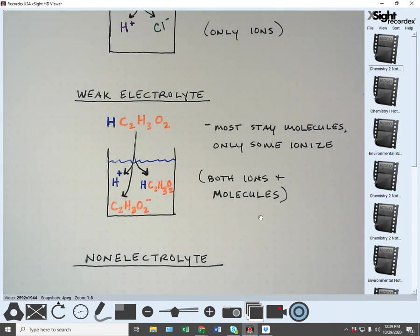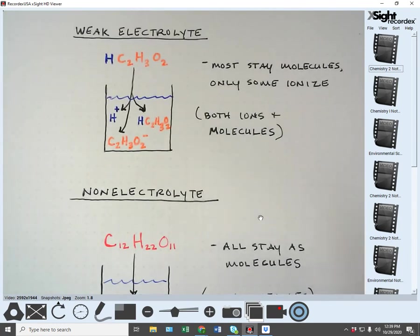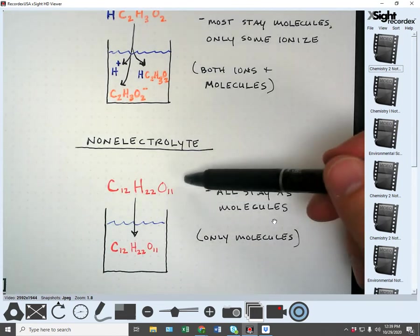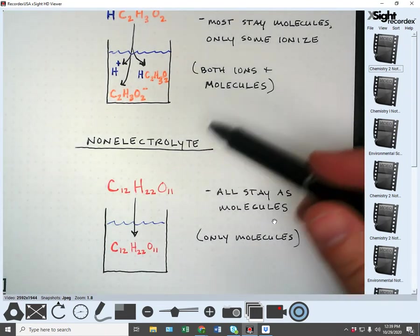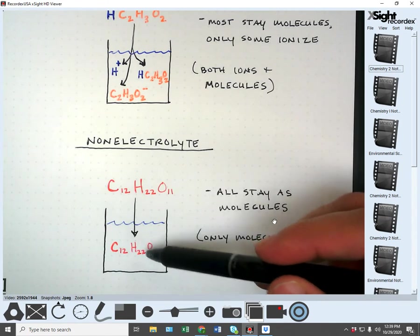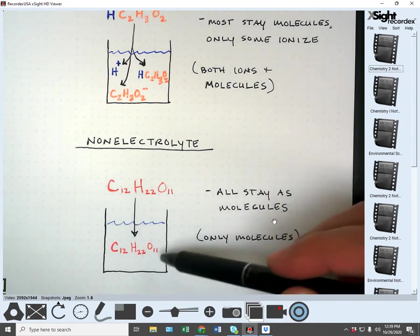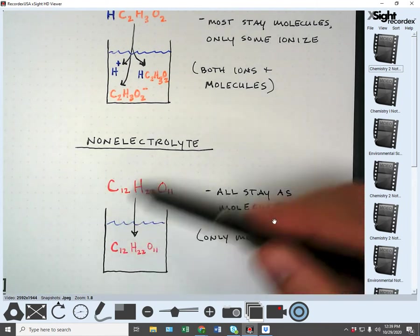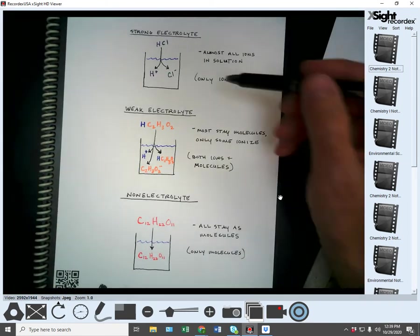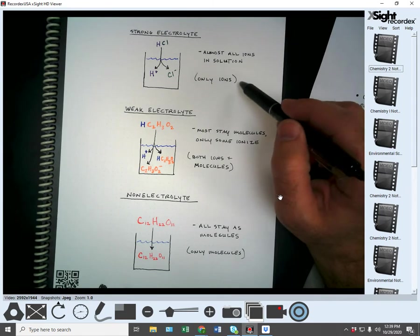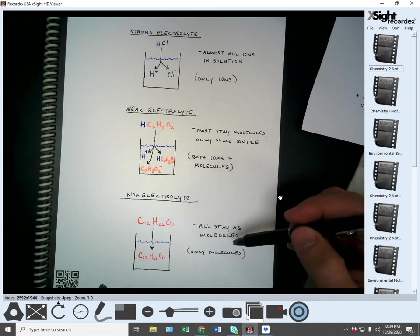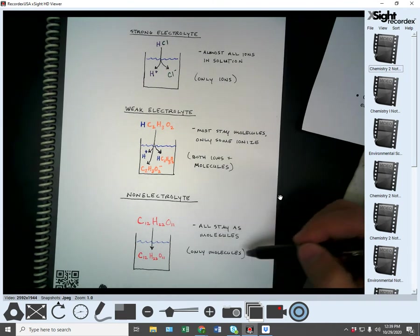The third one will be a non-electrolyte. In a non-electrolyte, such as sugar, the entire thing will stay as molecules. So when sugar dissolves in water, none of it ionizes at all. So it will entirely stay as molecules. Between the three, you've got the strong electrolyte which completely ionizes, the weak electrolyte which has some of both, and the non-electrolyte which is only molecules.